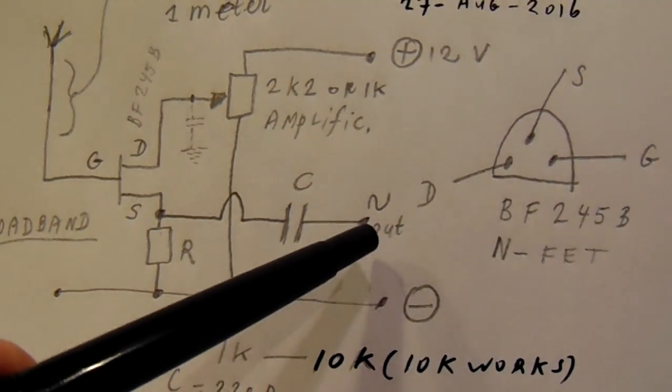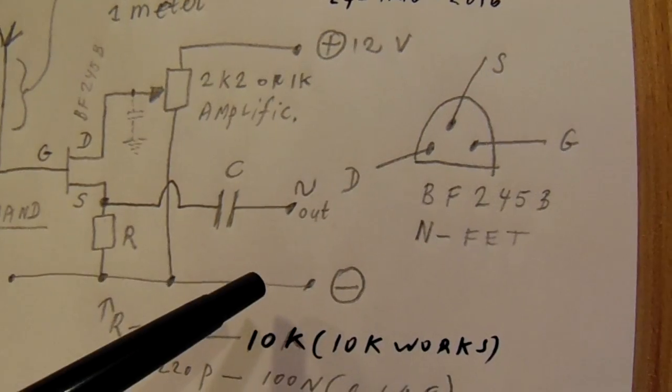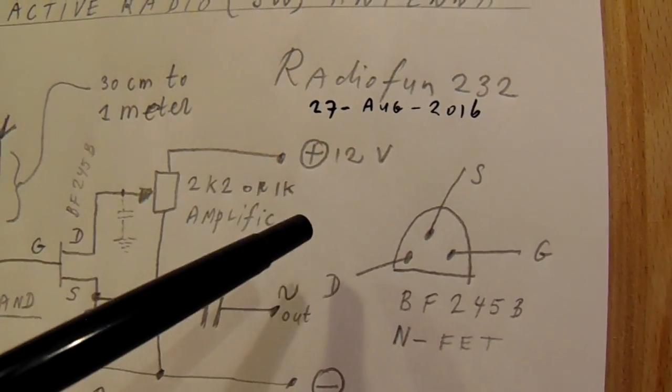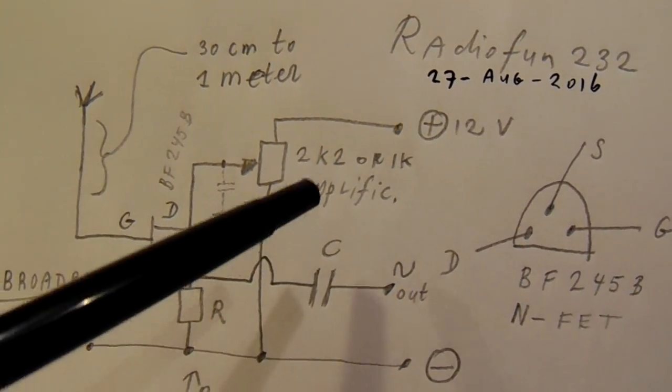So connect this to your radio here. This to the minus from that radio and here a separate power supply, and then you can set the amplification.